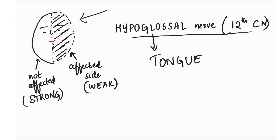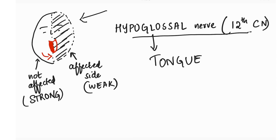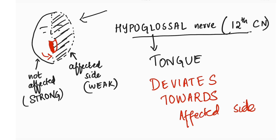In a lower motor neuron lesion, when the patient sticks out the tongue, this side is strong and this side is weak. What happens is these muscles push the tongue towards the affected side — so the tongue deviates towards the affected side in the case of the hypoglossal nerve.